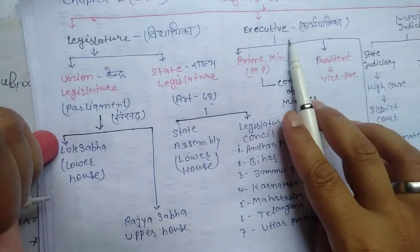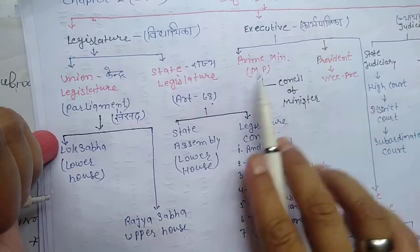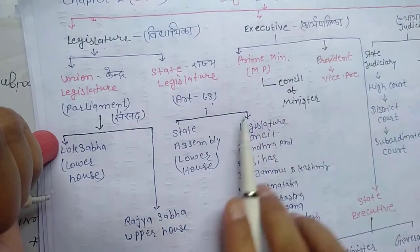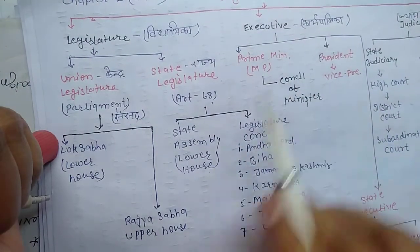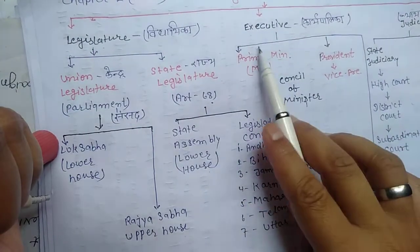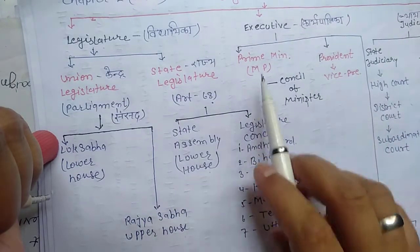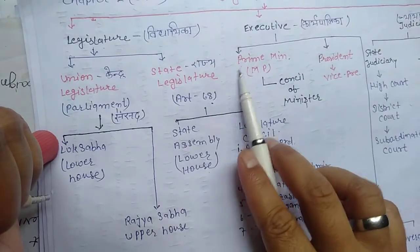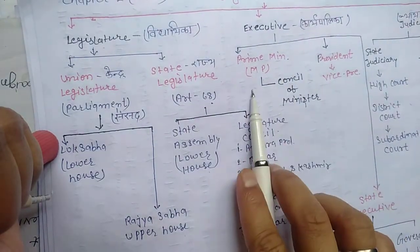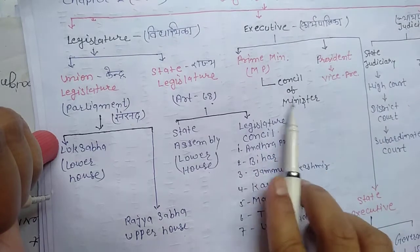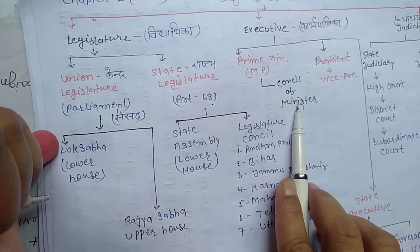Now let's see Executive. Executive has three parts. First: Prime Minister, MP, and Council of Ministers. This is the Council of Ministers.